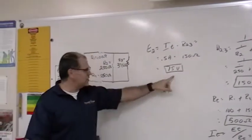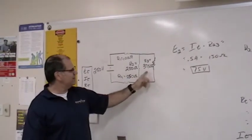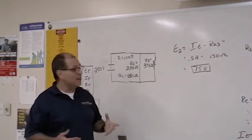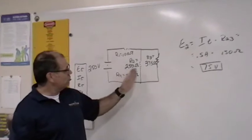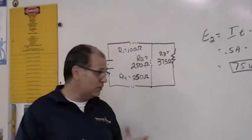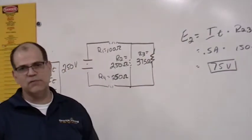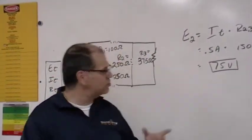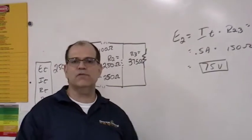Now, keep in mind, this same 75 volts is the same voltage across R3. So, if I wanted to solve for the individual currents across these two, now that I have the voltage, I can do that. But, in this case, all we're looking for is the voltage drop across the second resistor, and this is how you solve it.